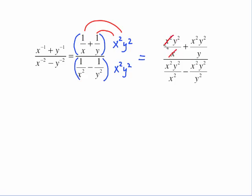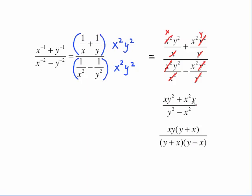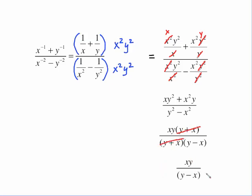Now cancel: x² over x leaves x, giving xy². The y² over y leaves y, giving x²y. On the bottom, x² cancels totally and y² cancels totally. Cleaning up: the top becomes xy² + x²y and the bottom is y² − x². Now factor — the top has a common factor of xy, leaving (y + x). The bottom is a difference of two squares: (y + x)(y − x). The (y + x) binomials cancel, leaving the final answer xy over (y − x).